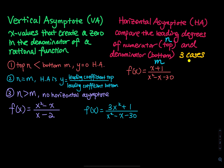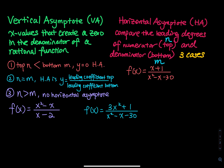There are three cases. Because you have a rational function — a polynomial divided by another polynomial — you find the biggest degree of the numerator and the biggest degree of the denominator and compare them. Case 1: when the leading degree of the top is less than the leading degree of the bottom, y equals zero is the horizontal asymptote.